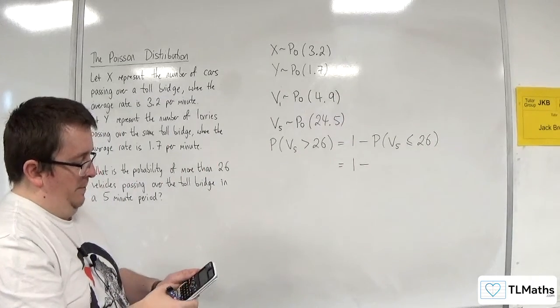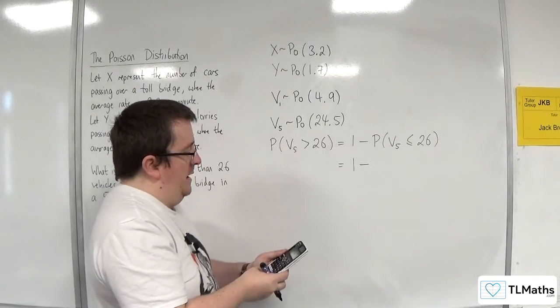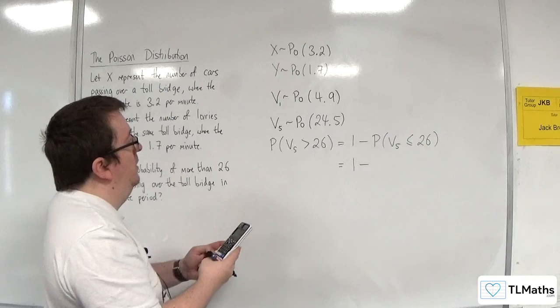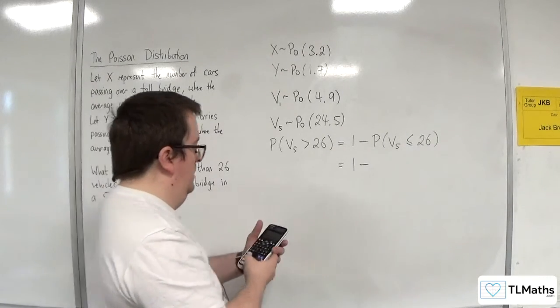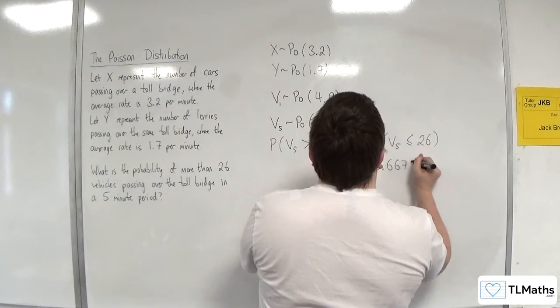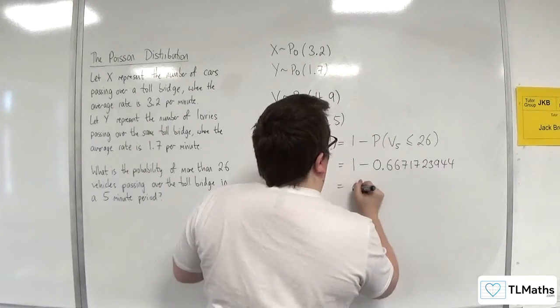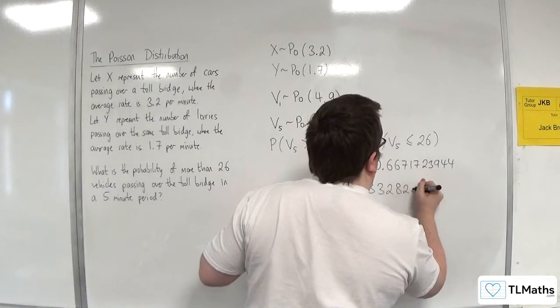So we've got a menu, number 7, scroll down to Poisson CD, variable, then X is 26, and lambda is 24.5. So 0.6671723944, so 0.332827.